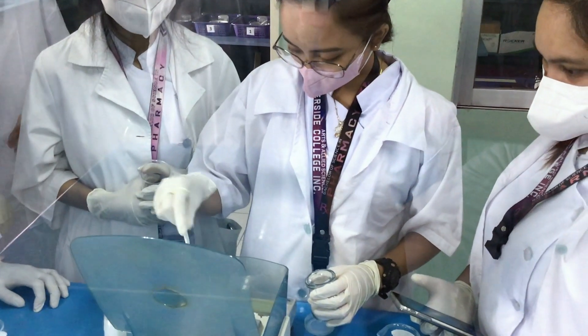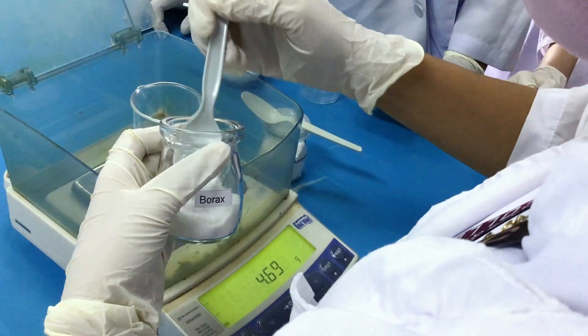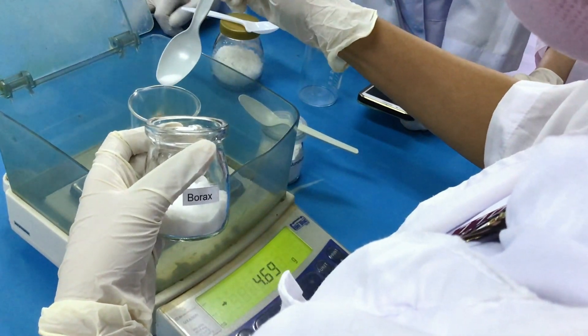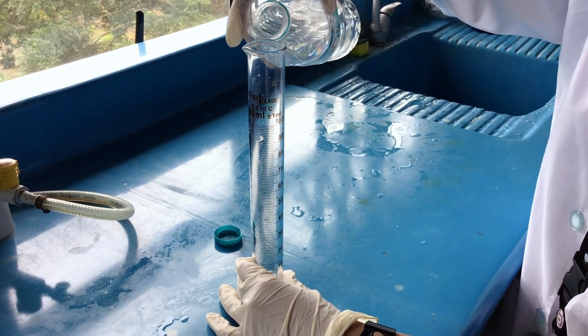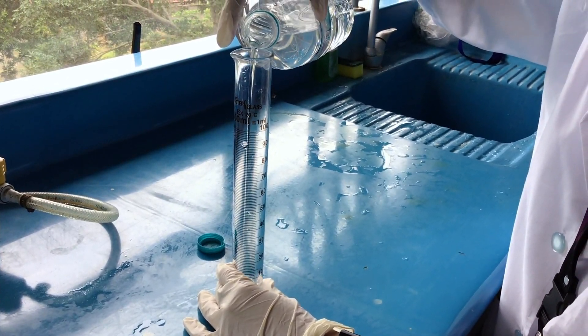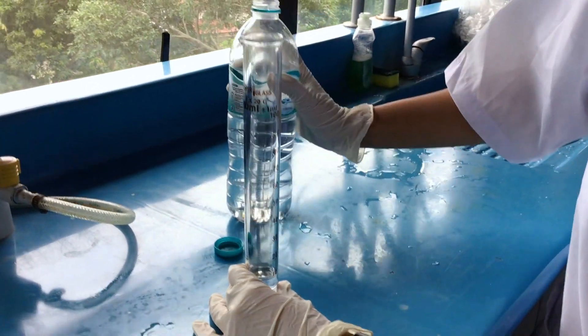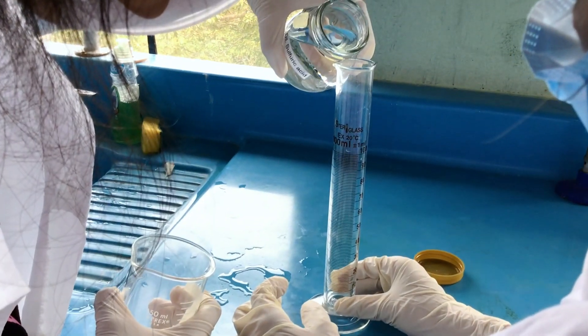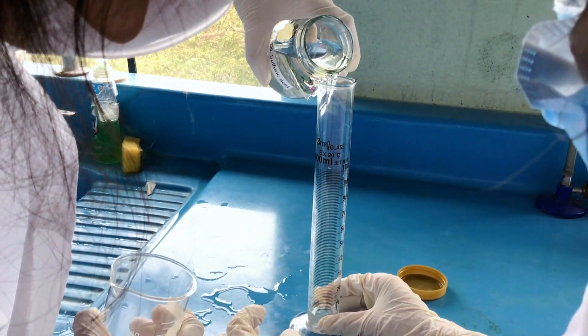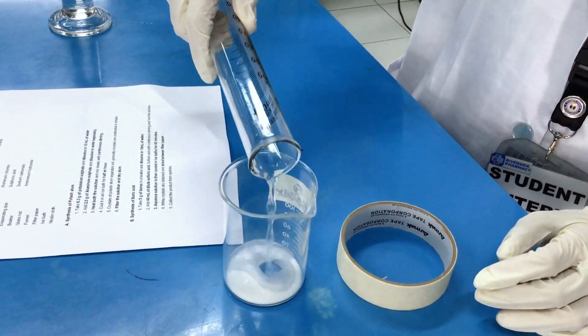For the synthesis of boric acid, first we need to obtain 5 grams of borax. Next, measure 10 milliliters of distilled water using a graduated cylinder. Lastly, obtain 40 milliliters of dilute sulfuric acid.